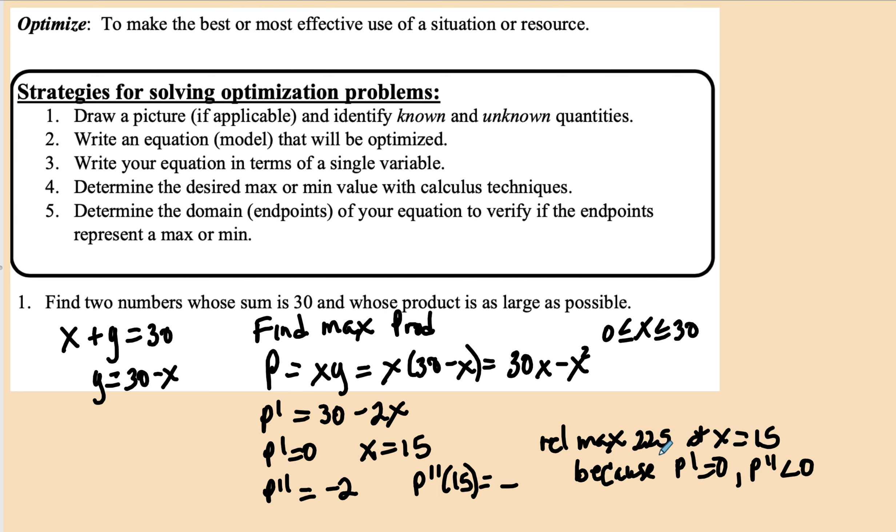Now I have found a relative max. Let's make sure I have found the absolute. Remember that if I allow x to be equal to 0, then my product will be 0 and that product isn't very big. And if I let it be 30 and I put 30 in here, I'm going to get 0. So my endpoints are not going to give me any bigger number. So I have the answer. That is an absolute max of 225 at x = 15.